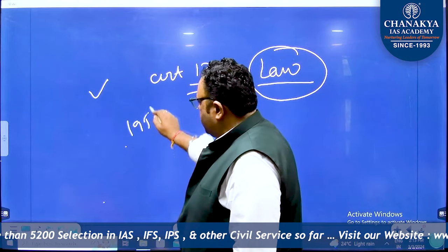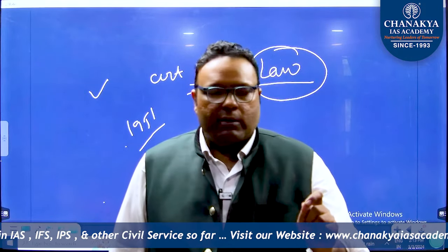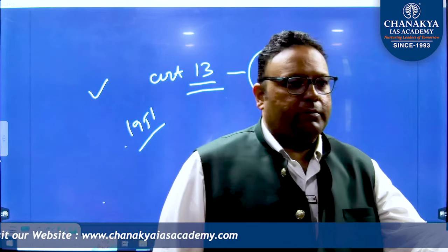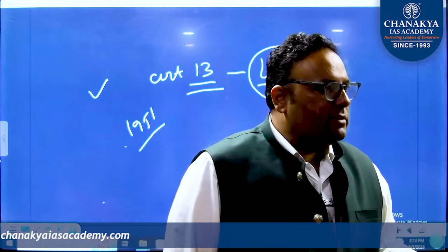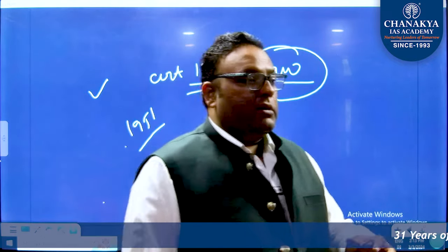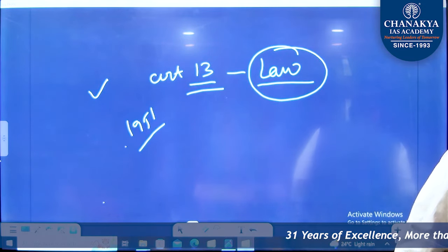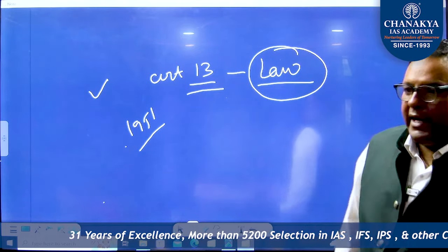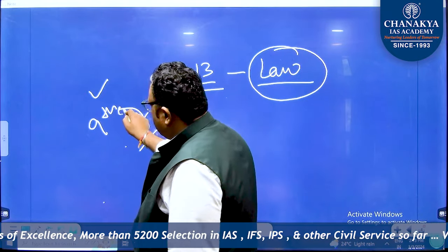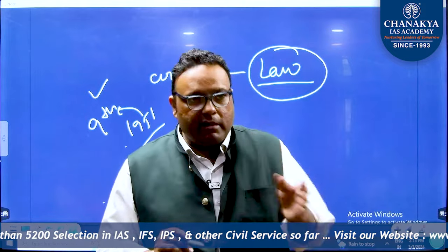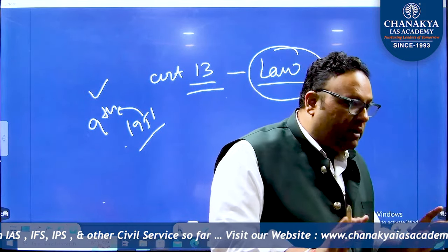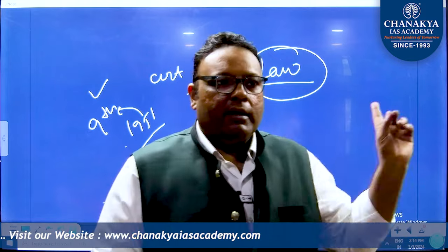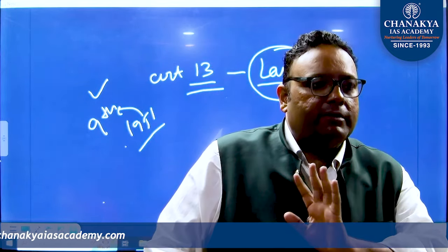1951 mein first constitution amendment hua, jisne right to property ko kuch limited kiya. Reason kya tha? Government of India ka target tha ki zamindari ko abolish karega, jisse landless logon ko land mil sake. Isliye government ne right to property ko khatam nahi kiya, jo fundamental right tha, balki kuch limit kiya aur ek ninth schedule banayi gayi. Us ninth schedule mein is tarah ke laws ko daalna shuru kar diya, aur us ninth schedule ko judicial review se baahir kar diya gaya - there was no scope of judicial review of ninth schedule at that initial time.